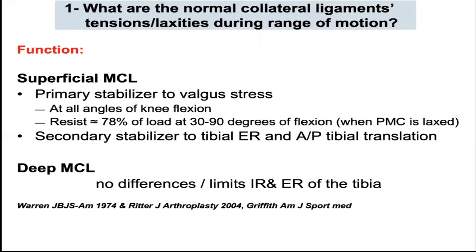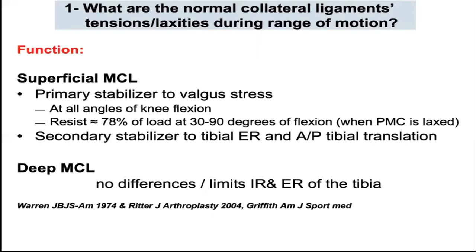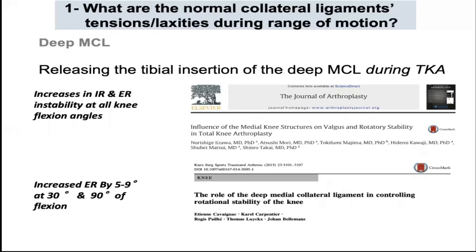The superficial component is the primary valgus stabilizer. It also limits tibial external rotation and anteroposterior translation. Regarding the deep component, previous studies reported contradictory results about its role in knee stability. However, these studies were performed without intact tendons and ligament structure around the knee joint. For many surgeons, releasing the tibial insertion of the deep MCL during total knee arthroplasty is part of their standard exposure. Two different studies found that its release resulted in rotational instabilities at different flexion angles.